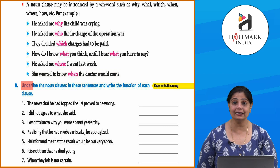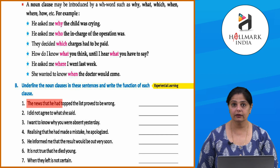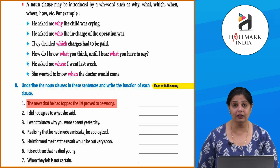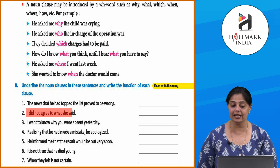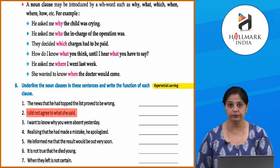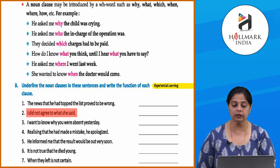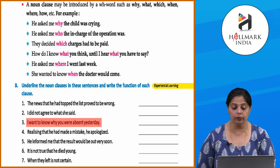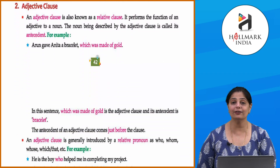'How do I know what you think until I hear what you have to say?' — two noun clauses here. 'He asked me where I went last week.' 'She wanted to know when the doctor would come.' Now let's underline the noun clauses: 'The news that he had topped the list proved to be wrong' — 'that he had topped the list' is the noun clause. 'I did not agree to what she said' — 'what she said' is the noun clause. 'I wanted to know why you were absent yesterday' — 'why you were absent yesterday' is the noun clause.